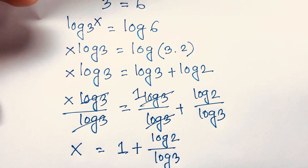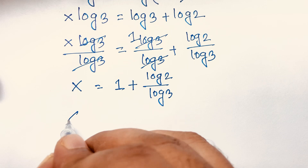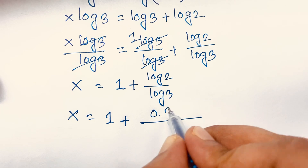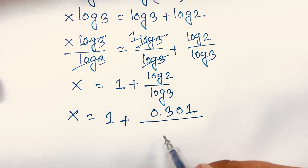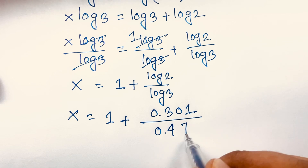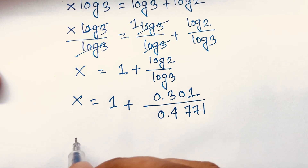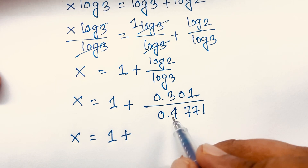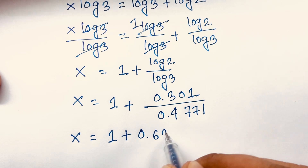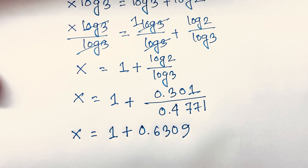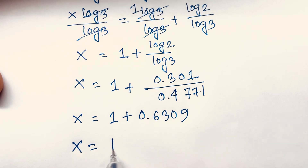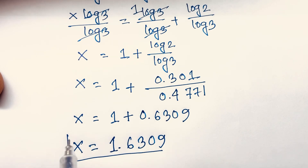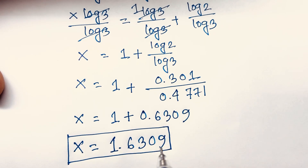Substituting numerical values: log 2 equals 0.301 and log 3 equals 0.4771. So x equals 1 plus (0.301 divided by 0.4771), which is approximately 0.6309. Adding both values, we get x is equal to 1.6309, which is our final answer.